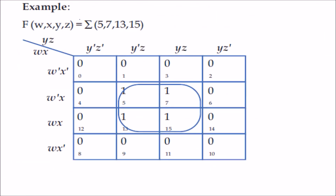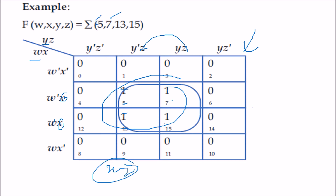For another example with sigma(5, 7, 13, 15) on a 4-variable K-map (w, x, y, z): place 1s at positions 5, 7, 13, 15, then combine all four. What is not changing? X is not changing, and z is not changing. So the answer is xz.